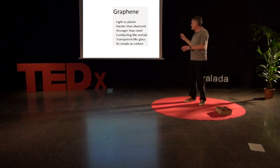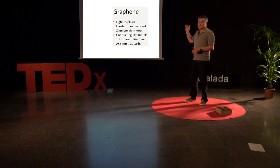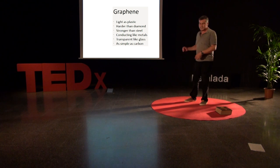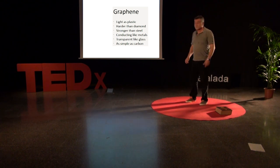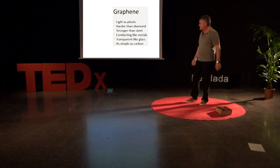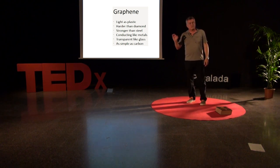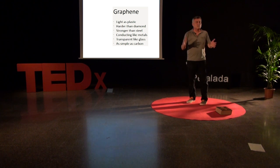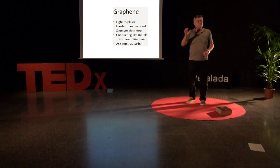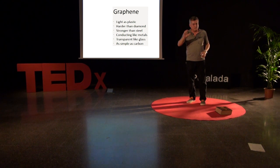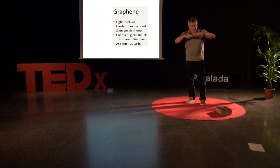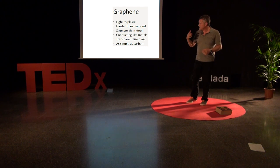Graphene is the hottest topic, growing faster than anything else. Maybe because of this list of superlative properties: it is the lightest — light as plastic — harder than diamond, stronger than steel, flexible, conducting like metals, transparent like glass, and so on. And as simple as carbon — it's just carbon atoms. Well, no, it's not just carbon atoms. It's carbon atoms inside the pencil combined with human ingenuity, human creativity, human knowledge. It is that combination that flourishes and yields these results.